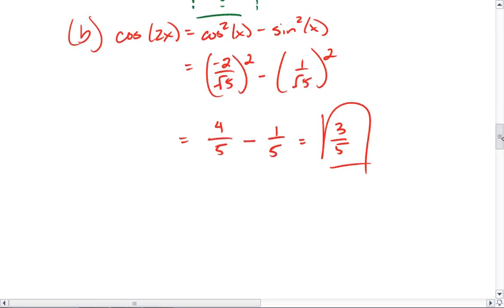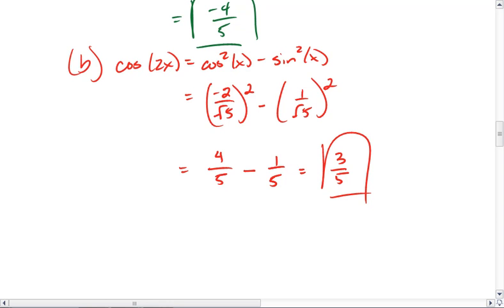Lastly, we're going to look at the tangent double angle. Now, this last one's up to you. You can either realize that tangent of 2x will equal sine of 2x divided by cosine of 2x.